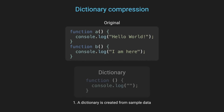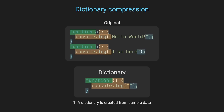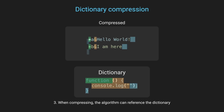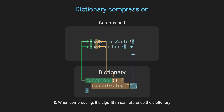How it works: a dictionary is created from sample data that's representative of the data you typically compress. This dictionary is shared between the compressor and the decompressor before the actual data compression begins. When compressing, the algorithm can reference pieces of the dictionary instead of encoding the full data, potentially achieving better compression. This can result in smaller compression sizes, especially for smaller messages or data sets with recurring patterns.